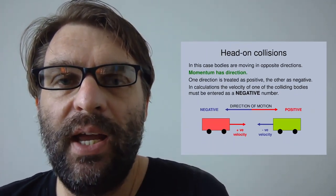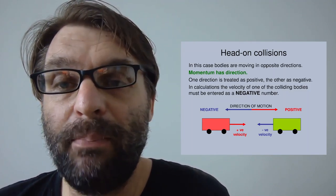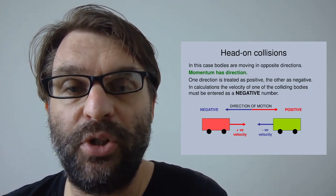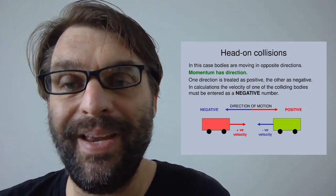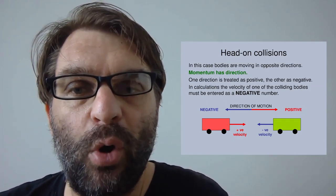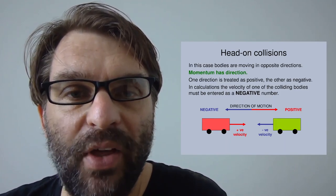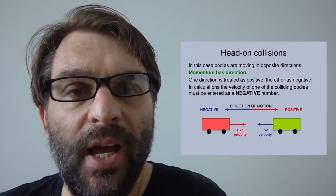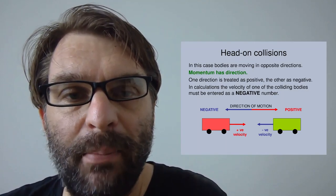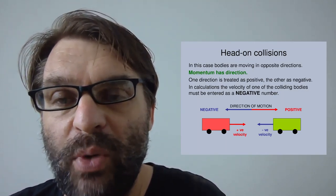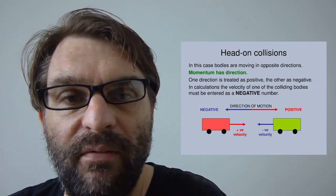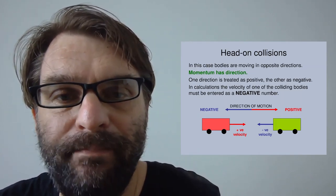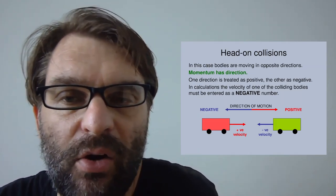In head-on collisions, the bodies of the objects are moving in opposite directions. Remember that momentum is a vector — it has a direction — therefore we treat one direction as positive and the other as negative. In calculations, the velocity of one of the colliding bodies must be entered as a negative number; in this case it's the yellow trolley, whereas the red trolley is considered a positive number. So the direction of motion becomes positive for the entire system, depending on the size of the velocity.